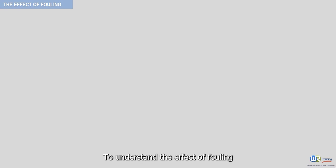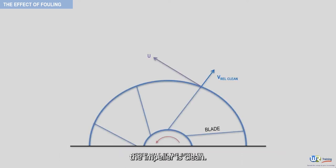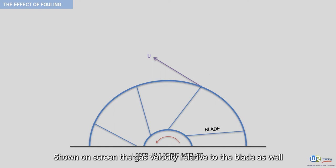To understand the effect of fouling, let's refer back to the previous example of a backward leaning impeller. Here the impeller is clean, shown on screen, with the gas velocity relative to the blade as well as the blade tip speed.